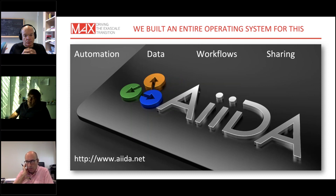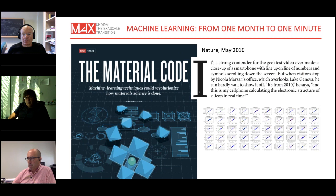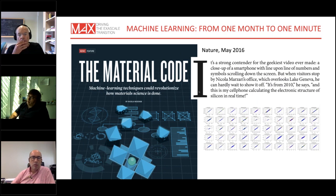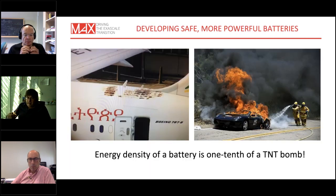To achieve this, we built what I call an entire operating system — workflows that go from a material to a property, with mechanisms to share data within collaborations or with the broader community. Key components are HPC codes, the MAX project, and machine learning. Machine learning is the great accelerator here: rather than always using brute-force quantum mechanical simulations, we can use those simulations to train machine learning algorithms to replicate quantum mechanics at a fraction of the cost. For solid-state electrolytes, machine learning reduced screening time from a month to a minute.